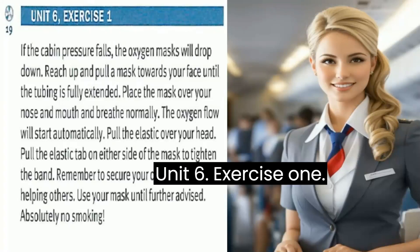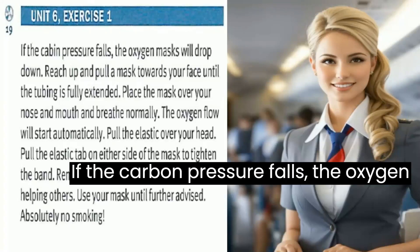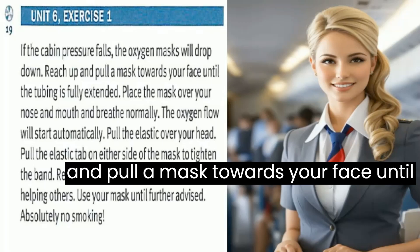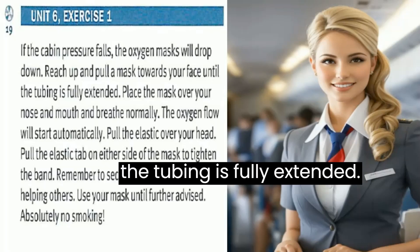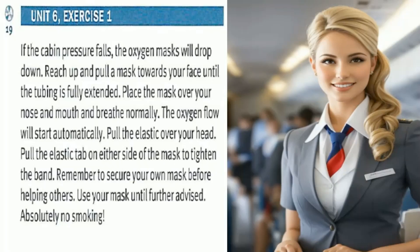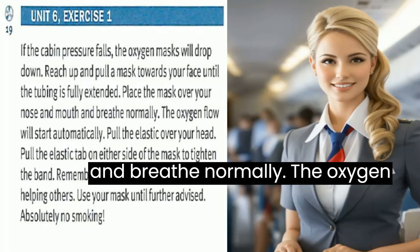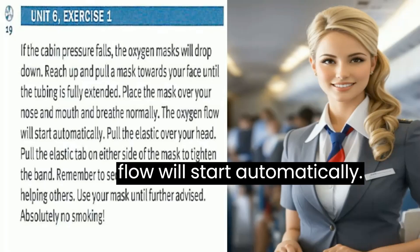Unit 6, Exercise 1. If the cabin pressure falls, the oxygen masks will drop down. Reach up and pull a mask towards your face until the tubing is fully extended. Place the mask over your nose and mouth and breathe normally. The oxygen flow will start automatically.